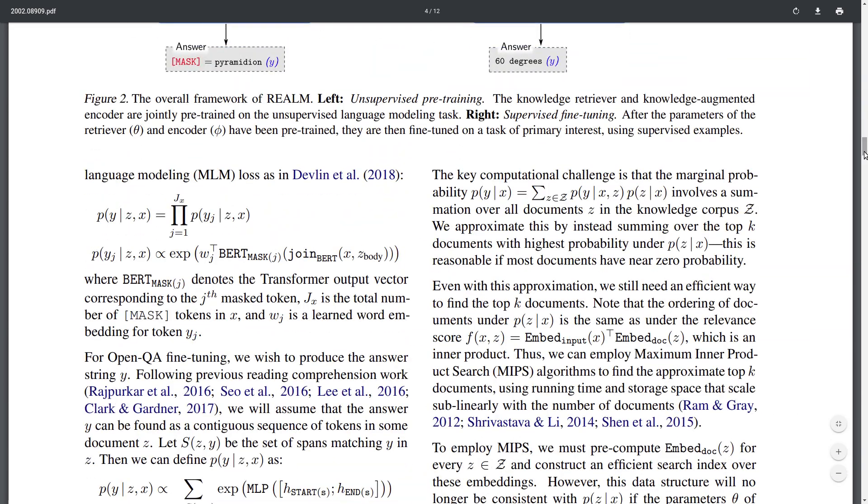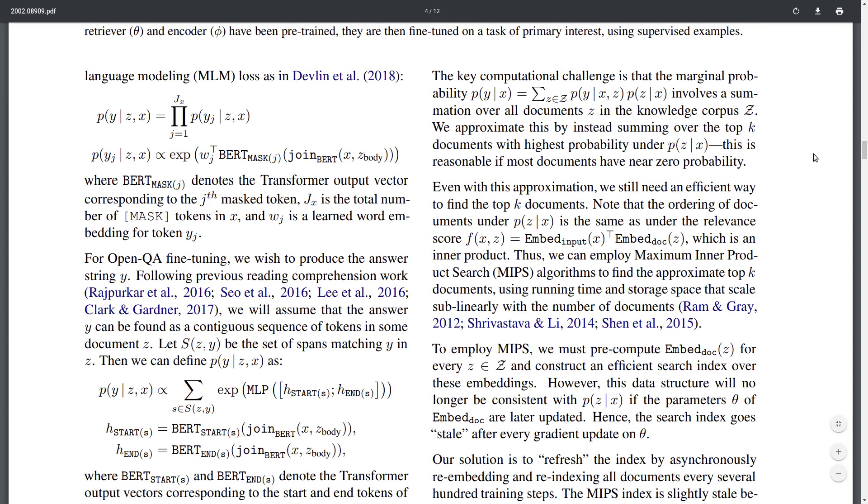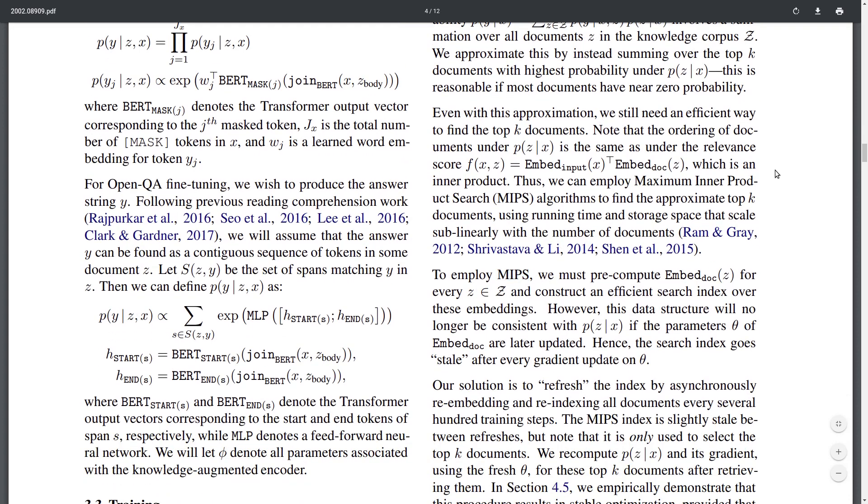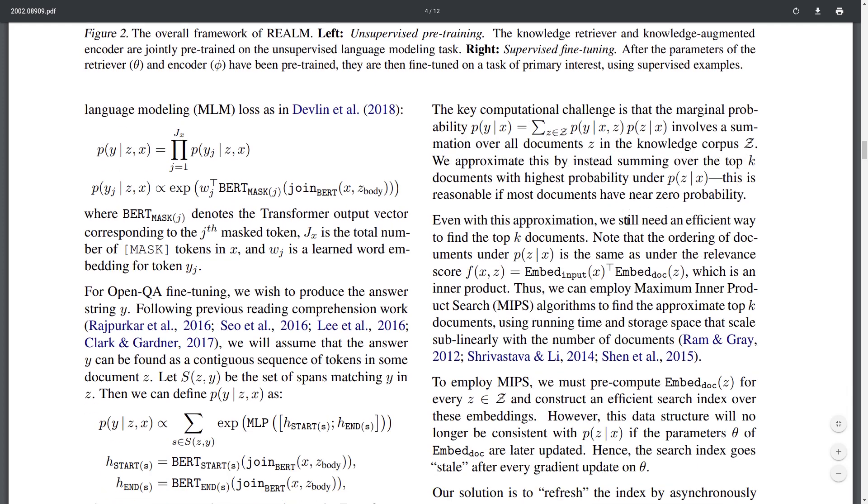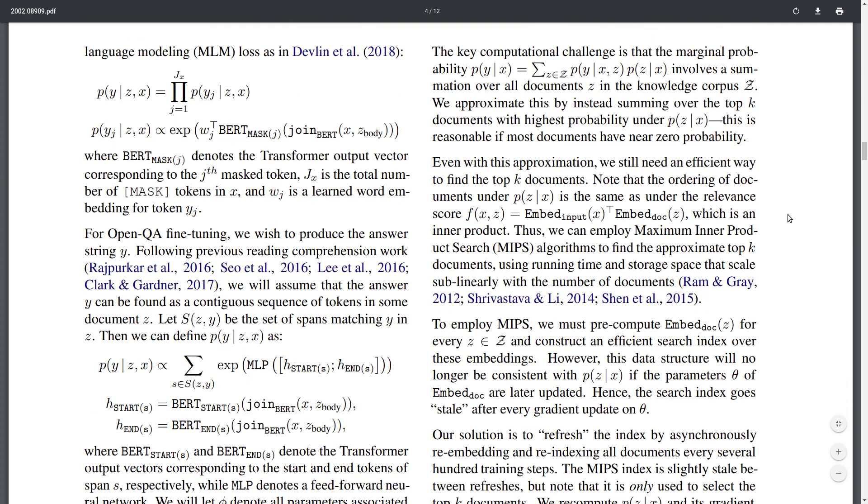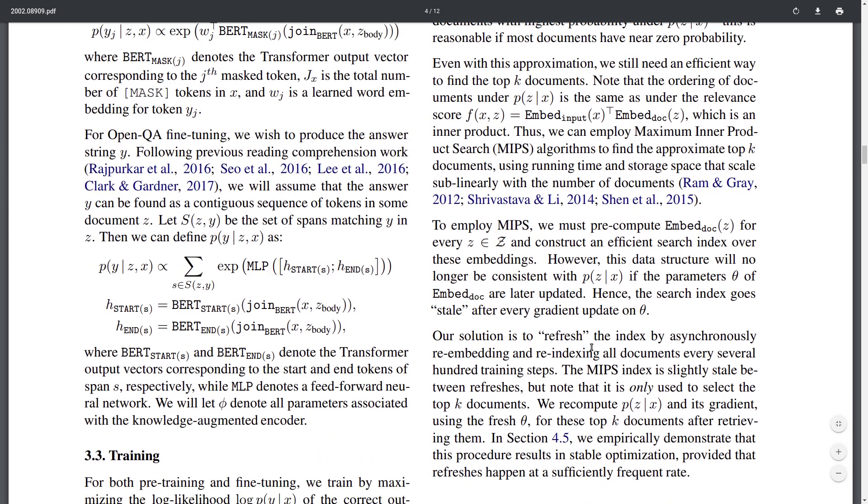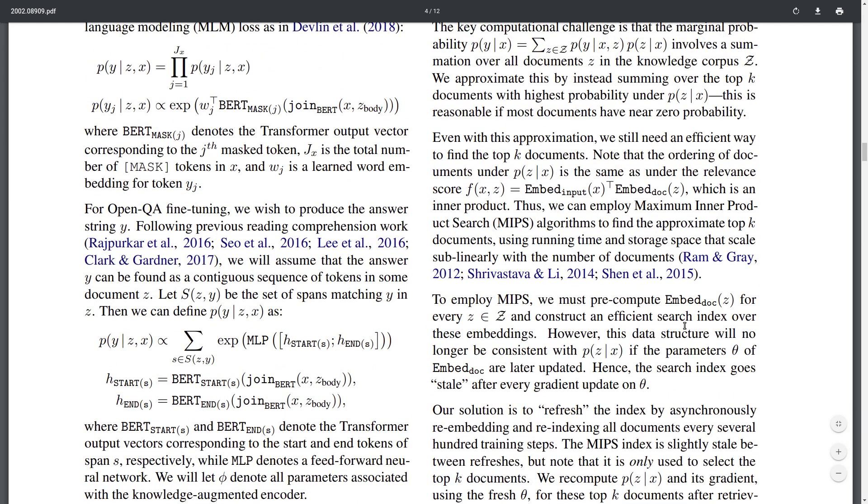So they actually come up with some approximations to do this, and they use an algorithm called MIPS, which basically does an approximate nearest neighbor style search to get the k closest documents given the input x. This is one challenge they have to deal with in this paper to make this work better. But another challenge one can think of is even if you're using this approximate algorithm to speed up this nearest neighbor retrieval of the relevant documents...